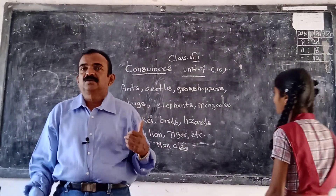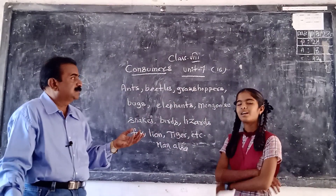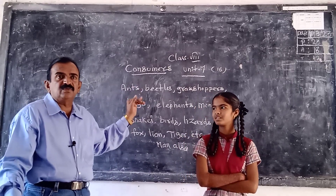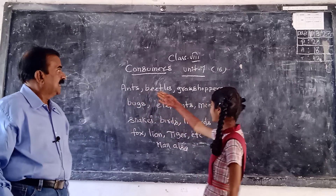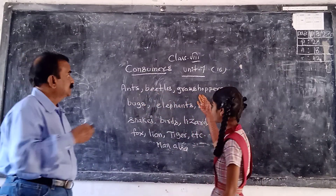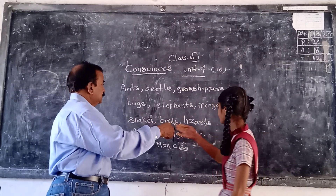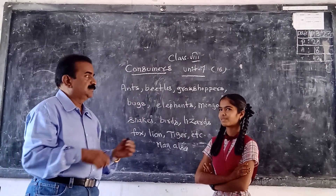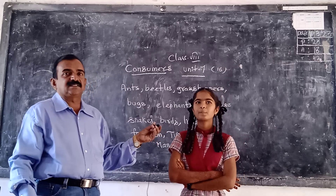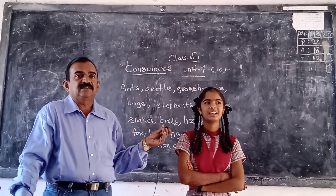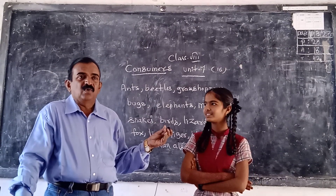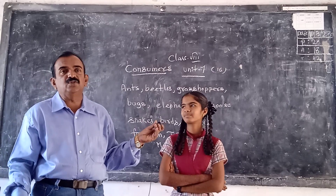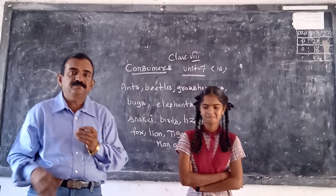So all of you, please come and read the animals. First you will say your name. How name is Sherenia? Sherenia is reading, telling the consumers which we observe in forest. Read. Ants, grasshoppers, grass, snakes, birds, lizards, fox, lion, tiger, etc. Without seeing on the blackboard, give some examples. Bugs, man, elephant, deer, snakes, birds — all these are the animals which live in forest and they are examples for consumers. Thank you, Sherenia.